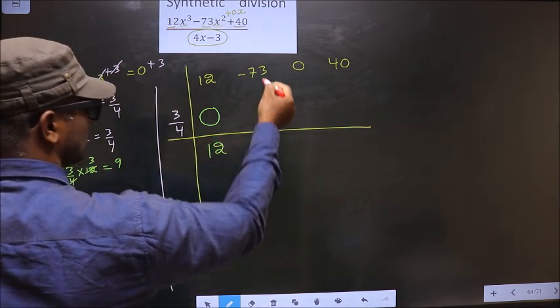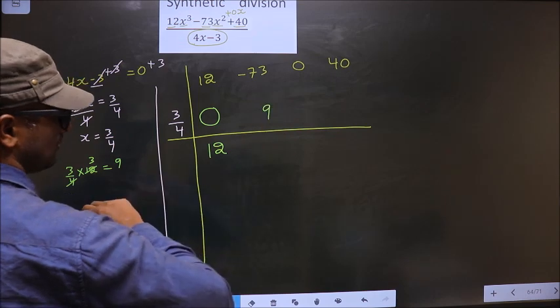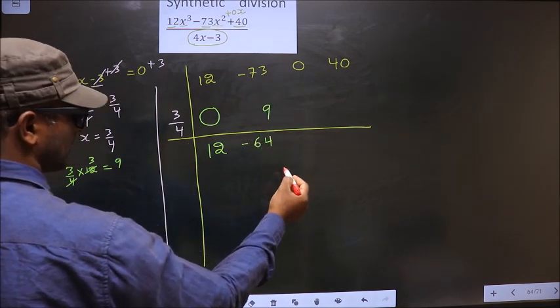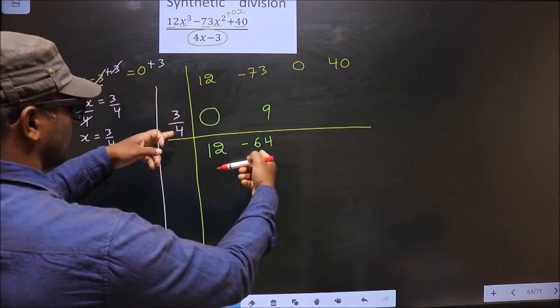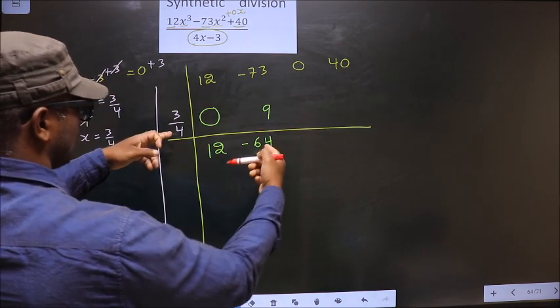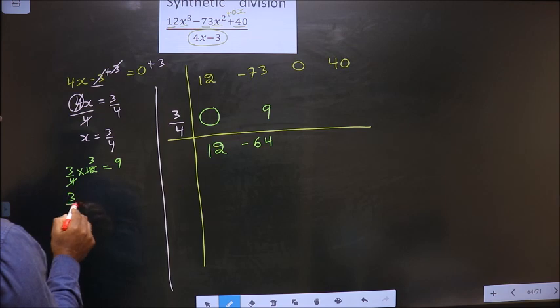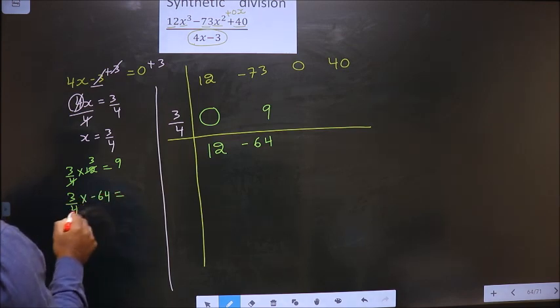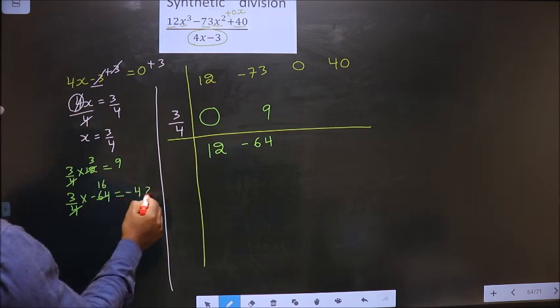We get 9. So now you add these 2. We get minus 64. Now you should multiply these 2 and write here. So that is 3 by 4 into minus 64.